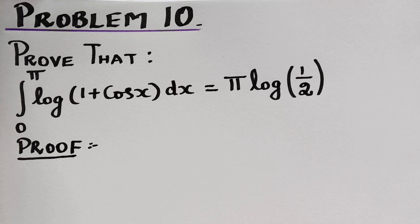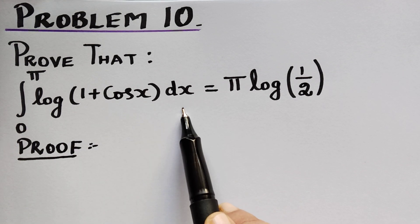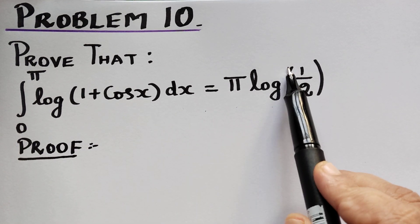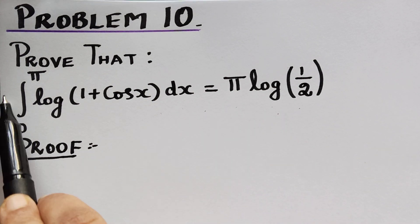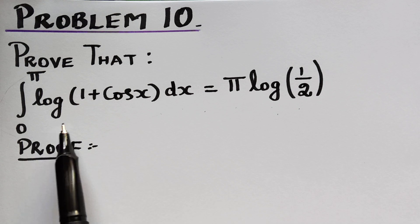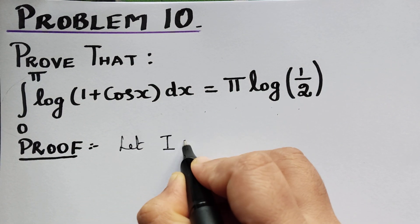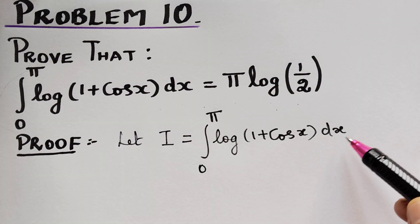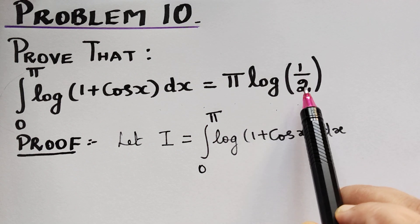Dear students, under the topic definite integrals, here we have problem 10. Already we have completed problems 1 to 9. The question is to prove that the integral from 0 to pi of logarithm of (1 + cos x) dx is equal to pi logarithm of 1 by 2. In order to prove this, we shall take the integral on the left hand side to be equal to I. So we have to prove that I is equal to pi log(1/2).